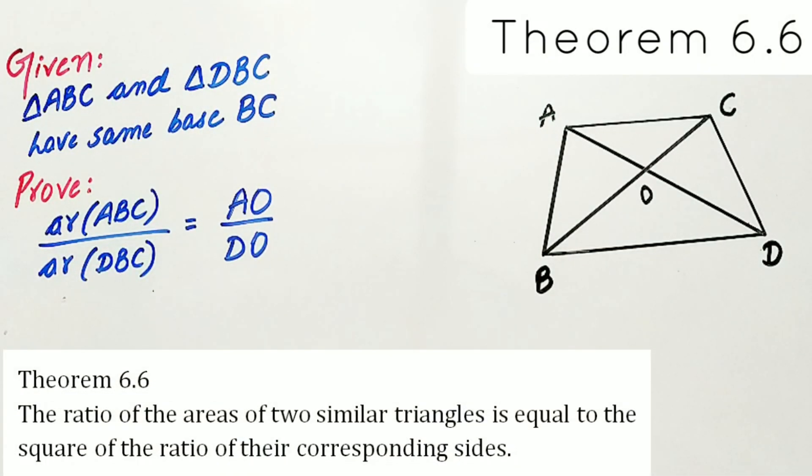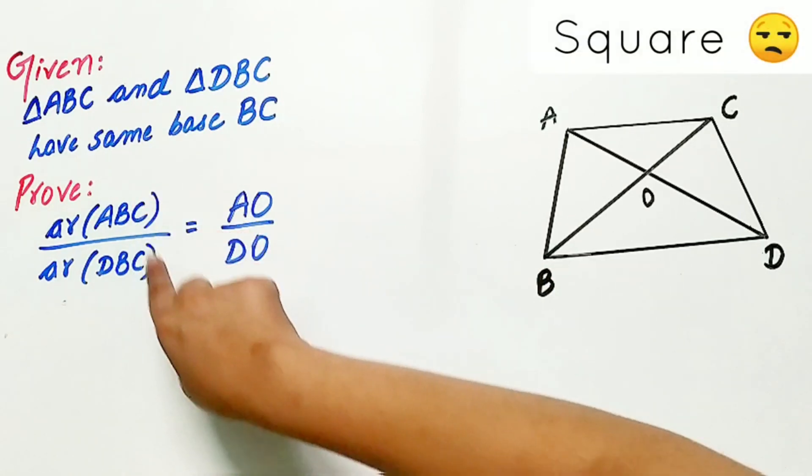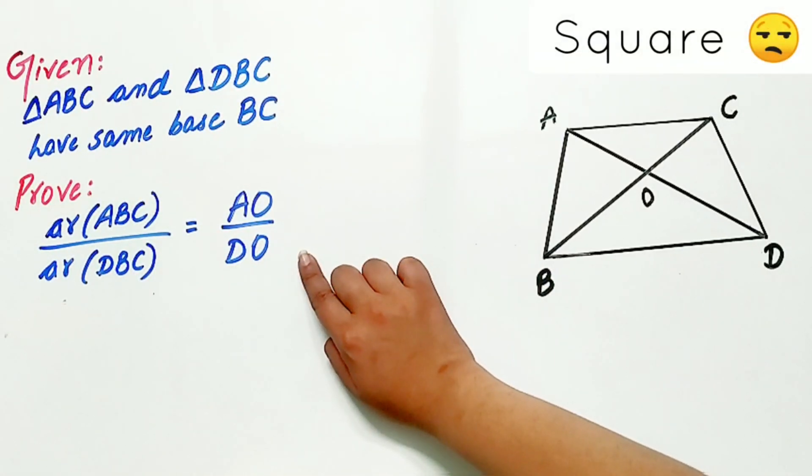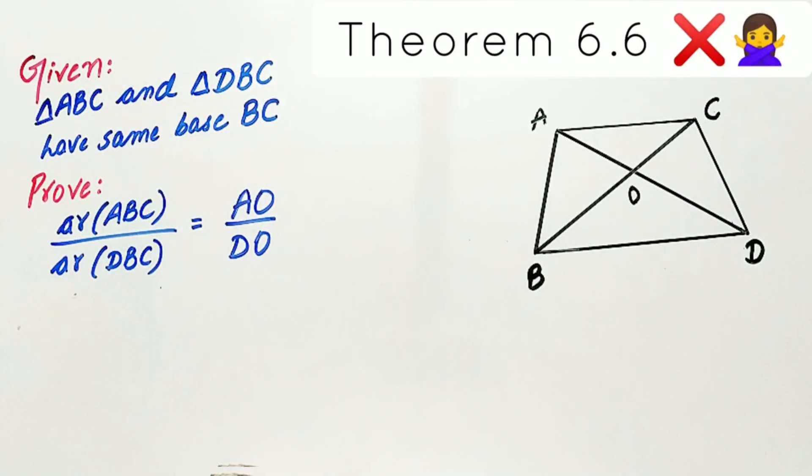Remember Theorem 6.6, which says the ratio of the areas of two similar triangles is equal to the square of the ratio of the corresponding sides. That means their ratio is equal to the square of the corresponding sides. Hence, we cannot use Theorem 6.6.